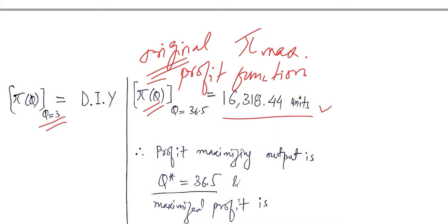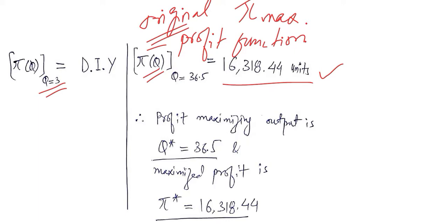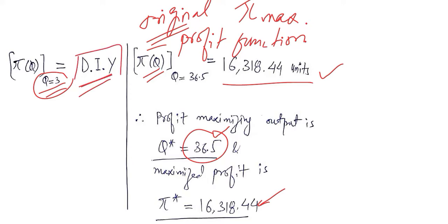This will be the answer — you can verify it. We can say that profit will be maximized, and the value of the maximized profit will be this result, if we produce 36.5 units of output. If we produce 3 units, the profit will be minimum — that you can calculate using the profit function yourself. This is a DIY — do it yourself — for you.